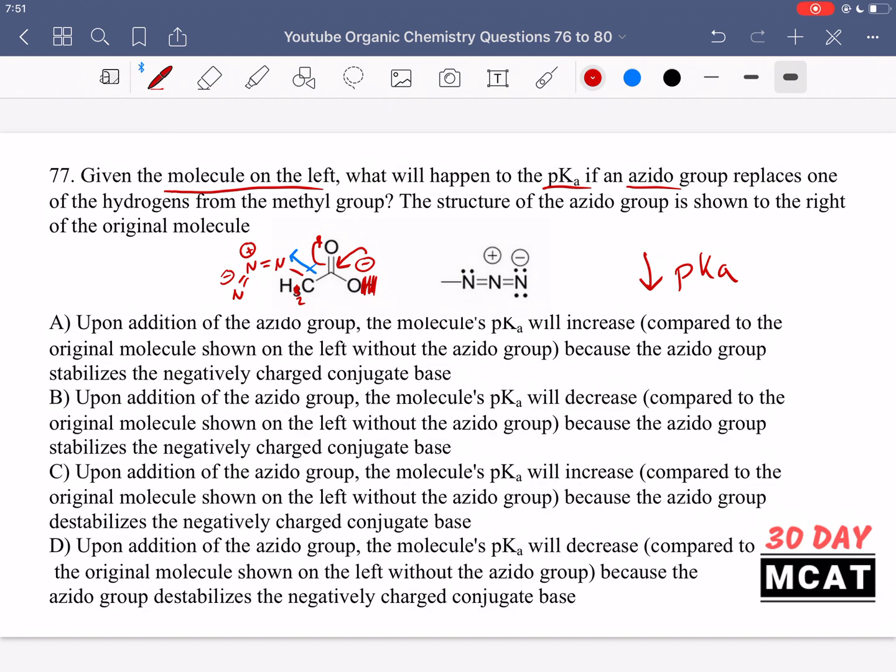So lower pKa, and the reason is because that negative charge is more distributed. Option A is saying upon addition of the azido group, the molecule's pKa will increase - that would be incorrect. B is saying it will decrease, compared to the original molecule because the azido group stabilizes the negatively charged conjugate base. Yes, that is correct.